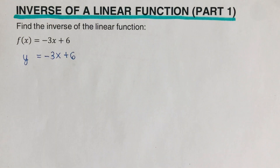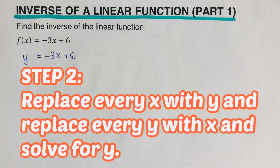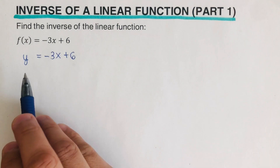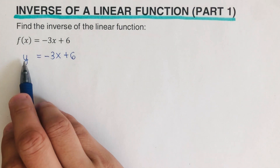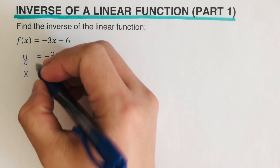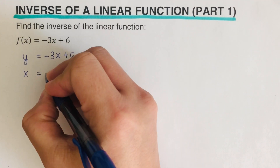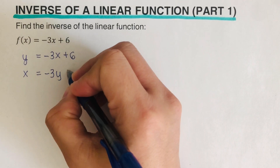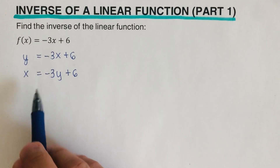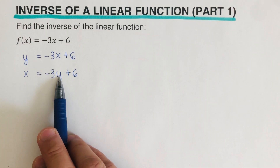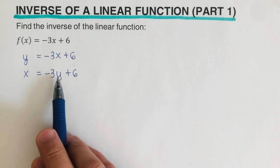The second step is to replace every x with y and replace every y with x, then solve for y. So this y will be replaced by x, giving us x = -3y + 6. The y becomes an x and the x becomes a y.